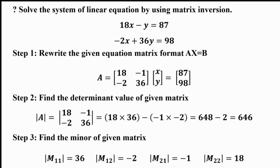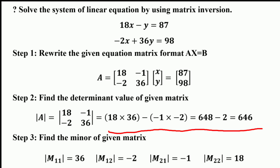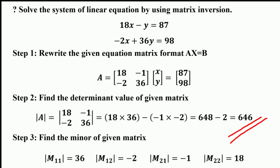After writing the matrix format AX = B, the second step is to find the determinant value of matrix A. The determinant of A = (18 × 36) − (−1 × −2) = 648 − 2 = 646. So the value of the determinant of the given matrix is 646.